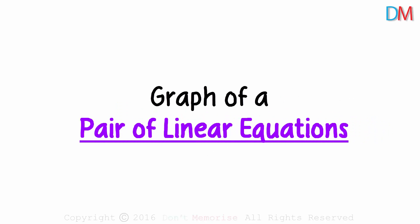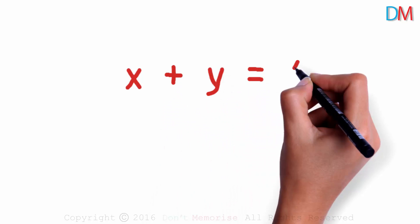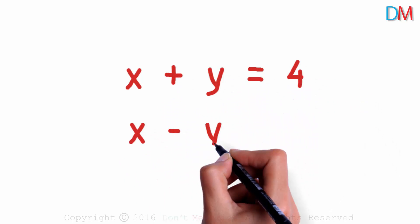How does the graph of a pair of linear equations look? Let's take two equations. First, x plus y equals 4 and second, x minus y equals 2.